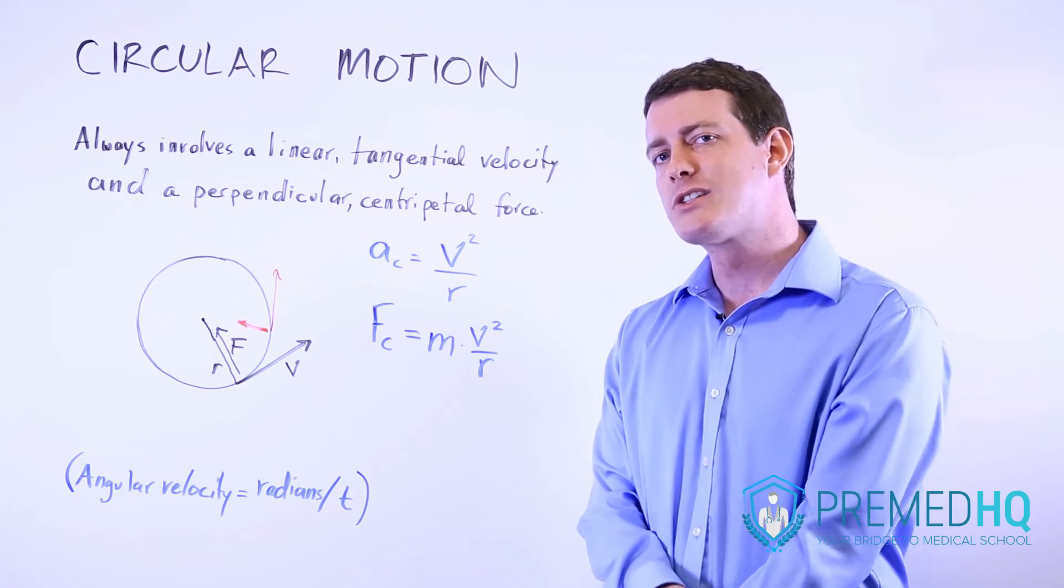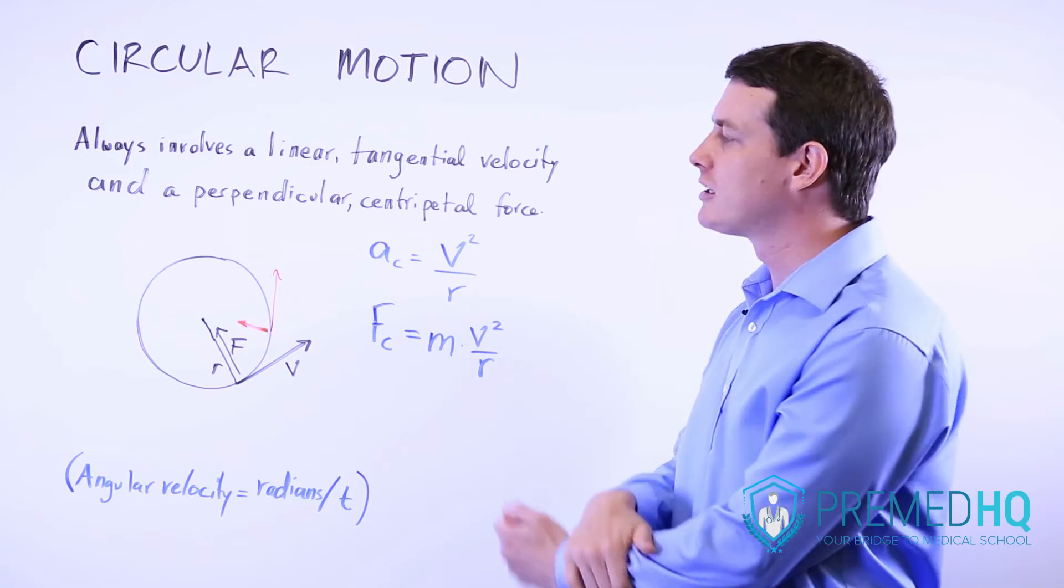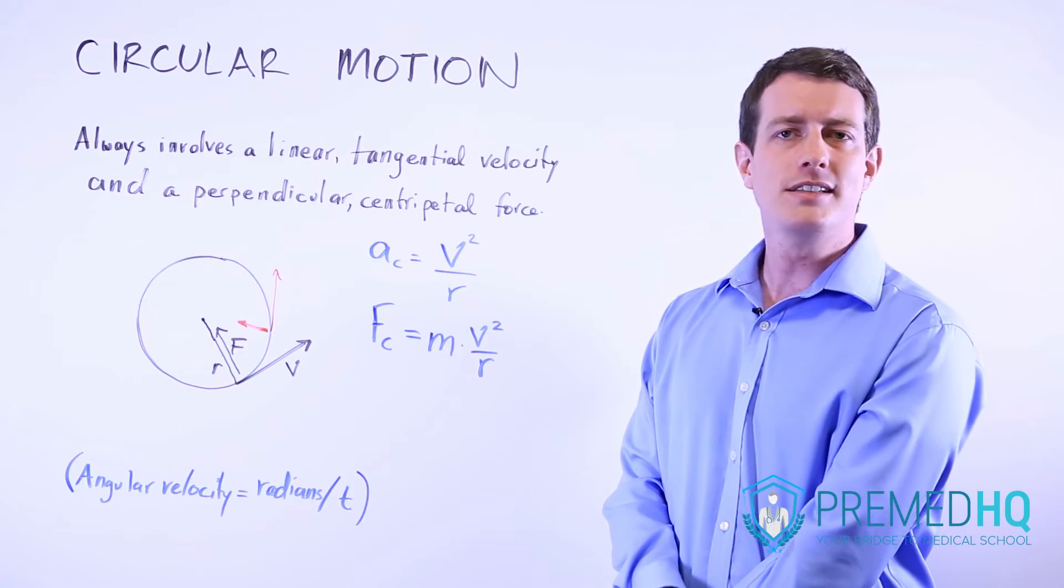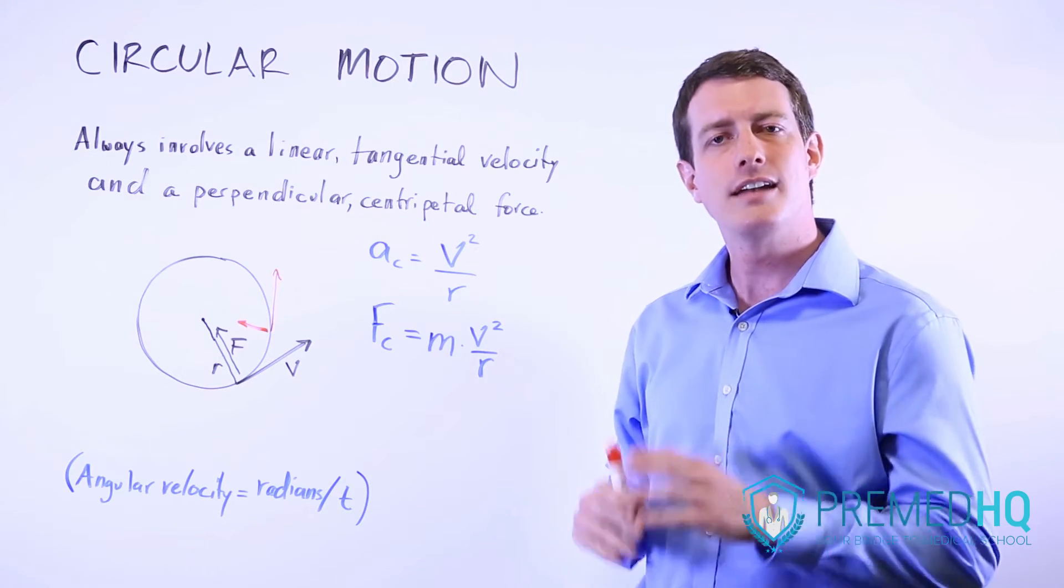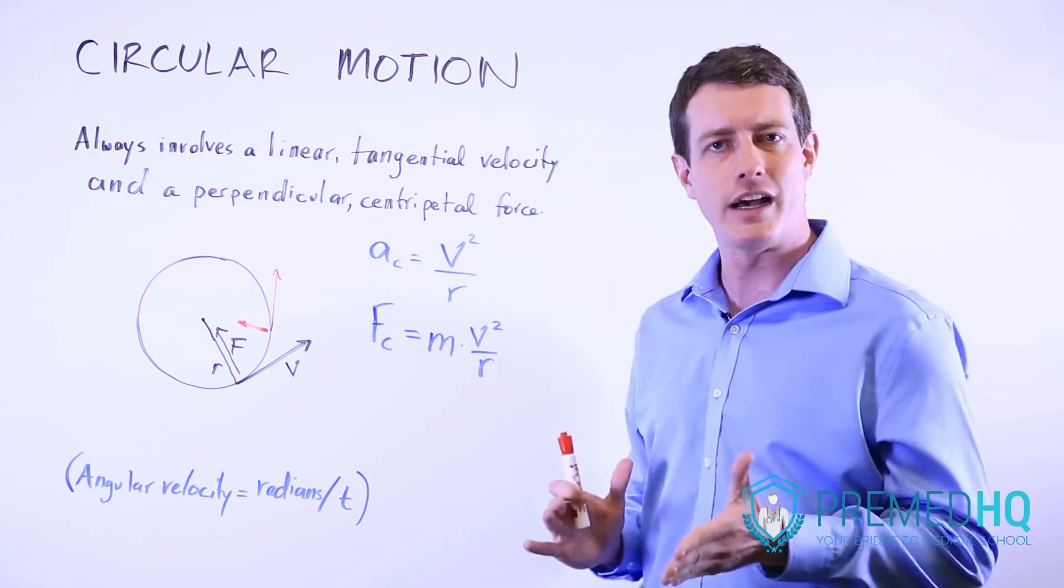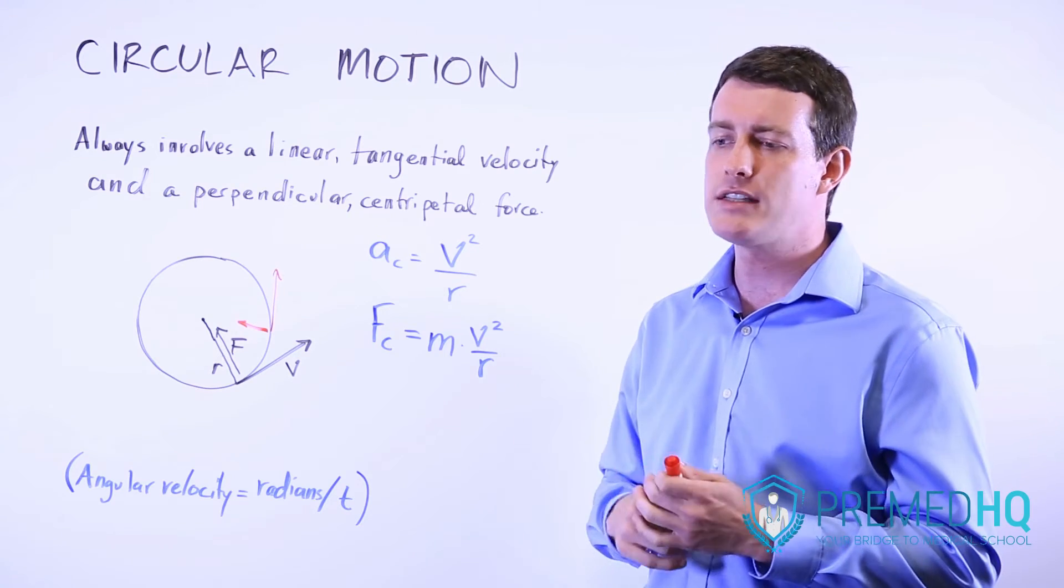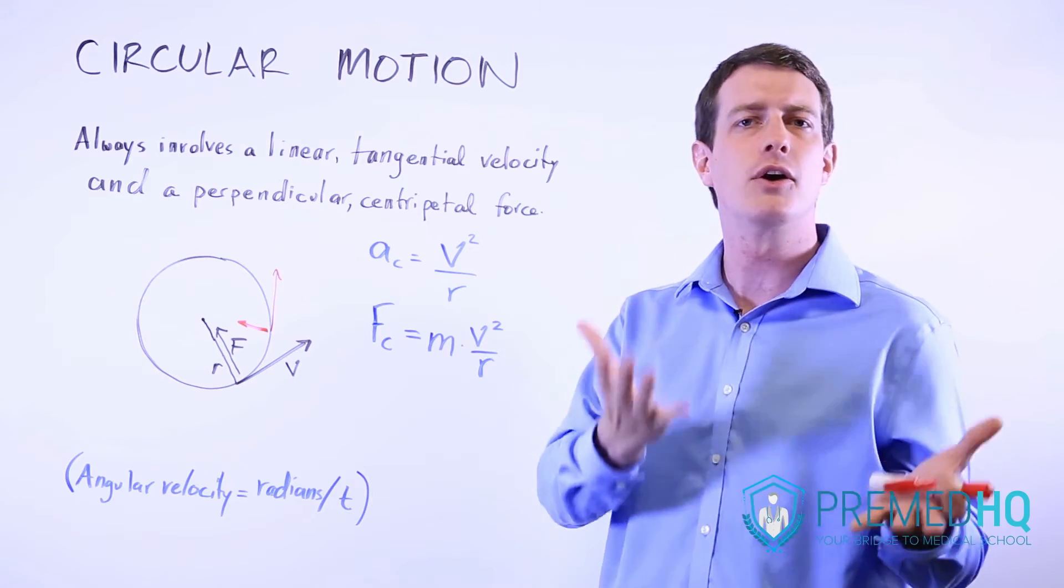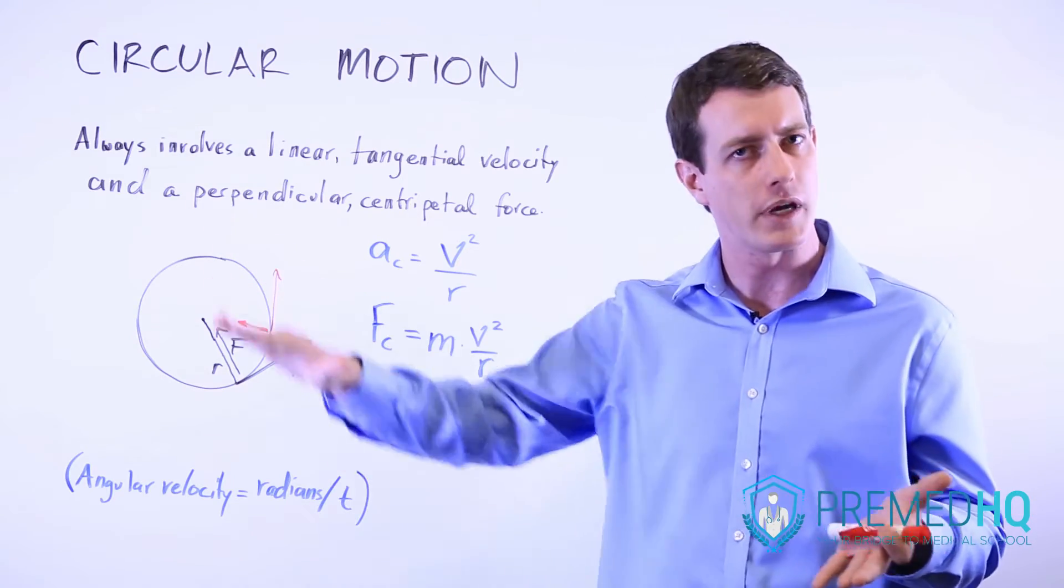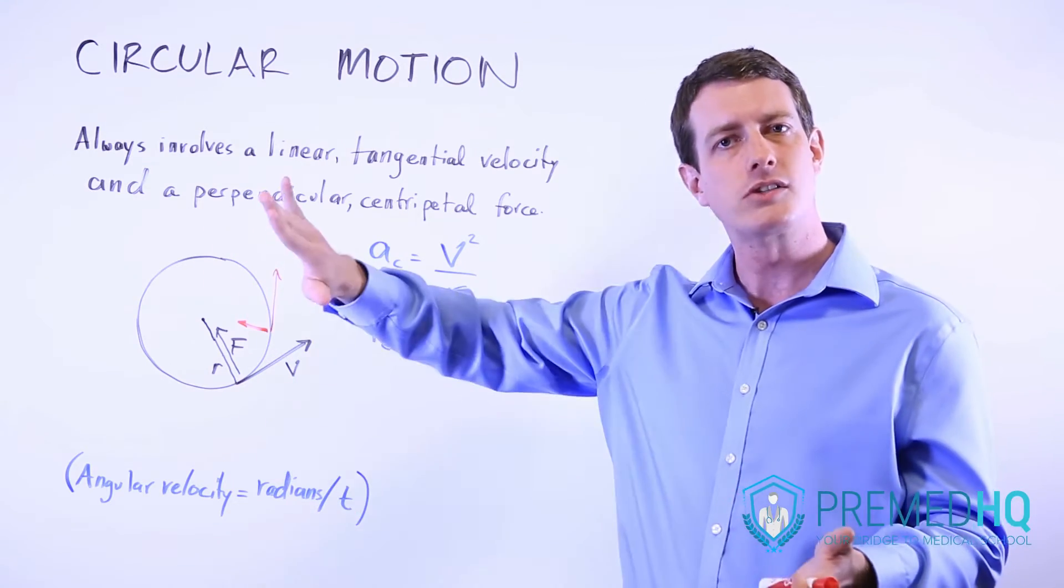Places you can expect to encounter circular motion on the MCAT are any times where you have an object moving in a circle and there is a force that is always perpendicular to that velocity. An example might be an object on a pendulum, or something like a character like Tarzan using a rope swing, where he's moving in a circular loop.